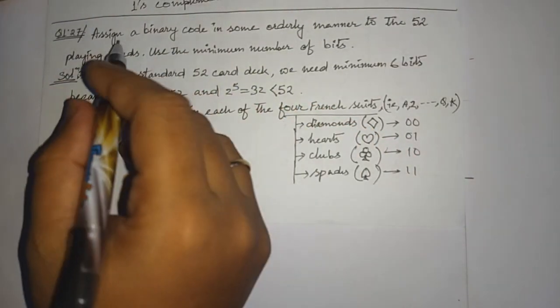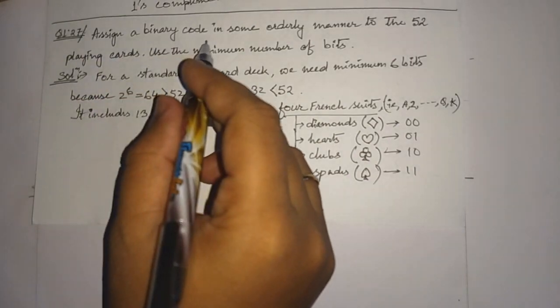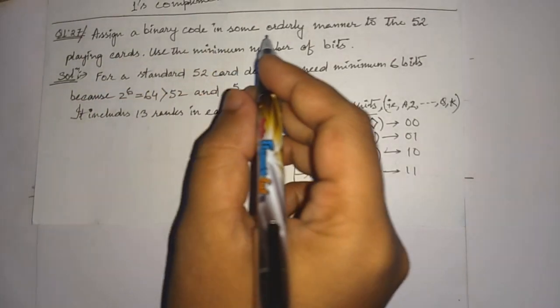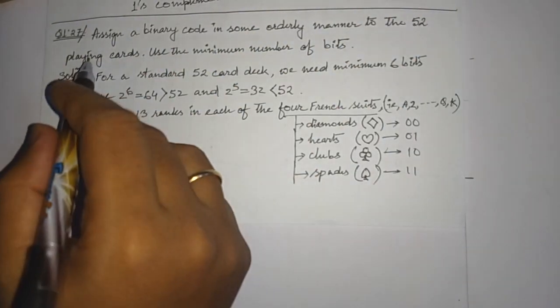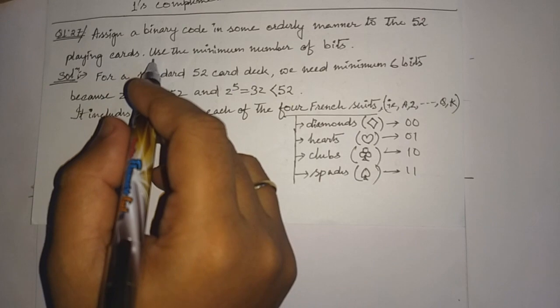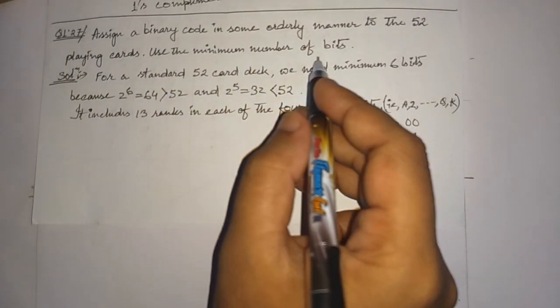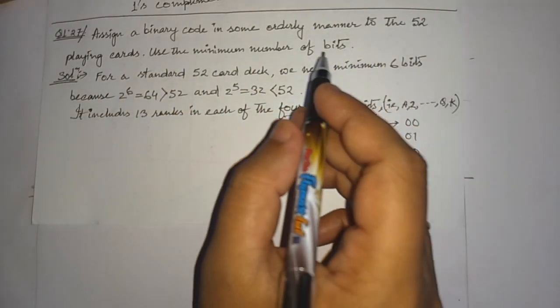The problem is: assign a binary code in some orderly manner to the 52 playing cards, using the minimum number of bits.